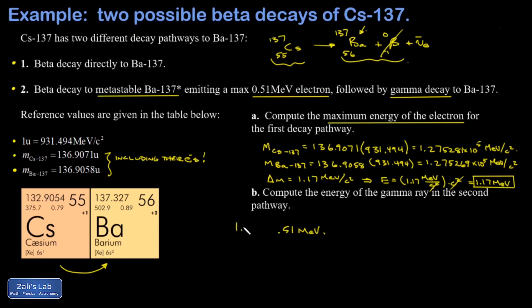I know that my reaction produces 1.17 MeV of total energy. 0.51 of that was carried away by the beta particle, so how much must be carried away by the gamma? I get that the energy of this photon is 0.66 MeV, and we're done.